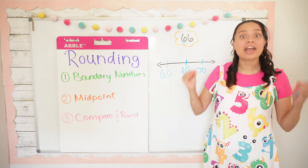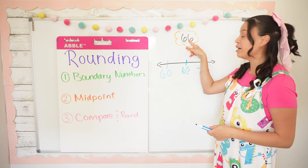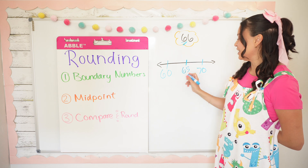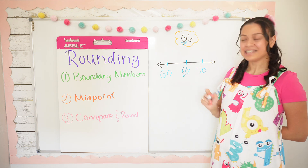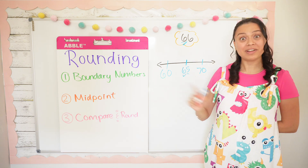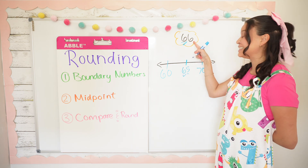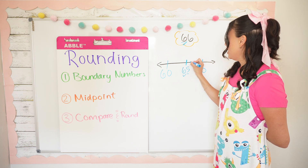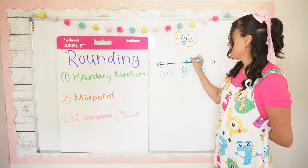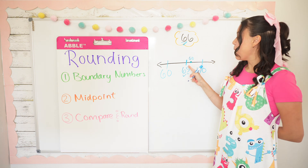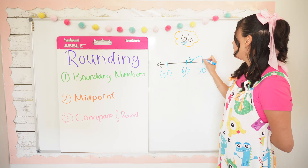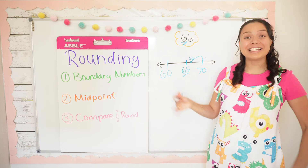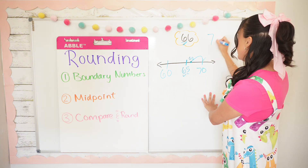Step number three: compare and round. We're going to compare our number with the midpoint and then round. Is six tens equal to six tens? Yes. What about six ones and five ones? No — six ones is greater than five ones. So it's going to be right here on the number line, just one more than 65: 66. And because it's greater than the midpoint, we're going to round up to 70. So 66 rounded to the nearest 10 is equal to 70.